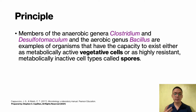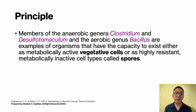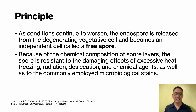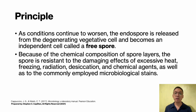In principle, members of the anaerobic genera Clostridium and Sporodesulfotomaculum and the aerobic genus Bacillus are examples of organisms that can exist either as metabolically active vegetative cells or as highly resistant, metabolically inactive cells called spores. When environmental conditions become unfavorable — particularly with exhaustion of the nutritional carbon source — these cells undergo sporogenesis and give rise to a new intracellular structure called endospores, surrounded by impervious layers called spore coats.